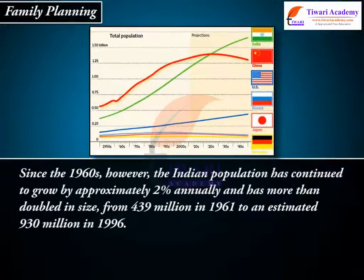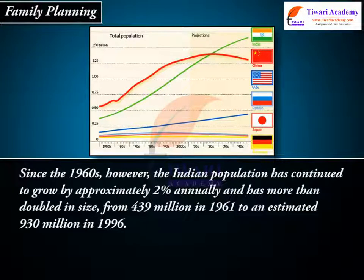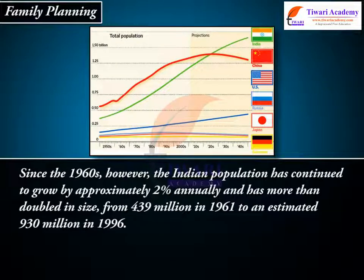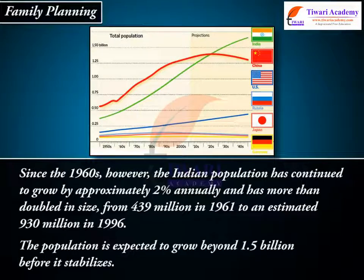Since the 1960s, however, the Indian population has continued to grow by approximately 2% annually and has more than doubled in size from 439 million in 1961 to an estimated 930 million in 1996. The population is expected to grow beyond 1.5 billion before it stabilizes.